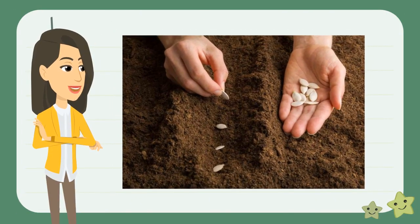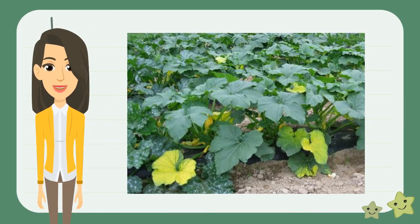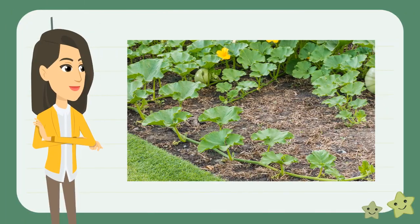First, the seed is planted in the ground in the springtime by a farmer or even by you. About 10 days after the pumpkin seed is planted, you'll start seeing the first few leaves start to grow from the ground. A few weeks later, you'll start to see the vines spread out and the flower buds begin to sprout.